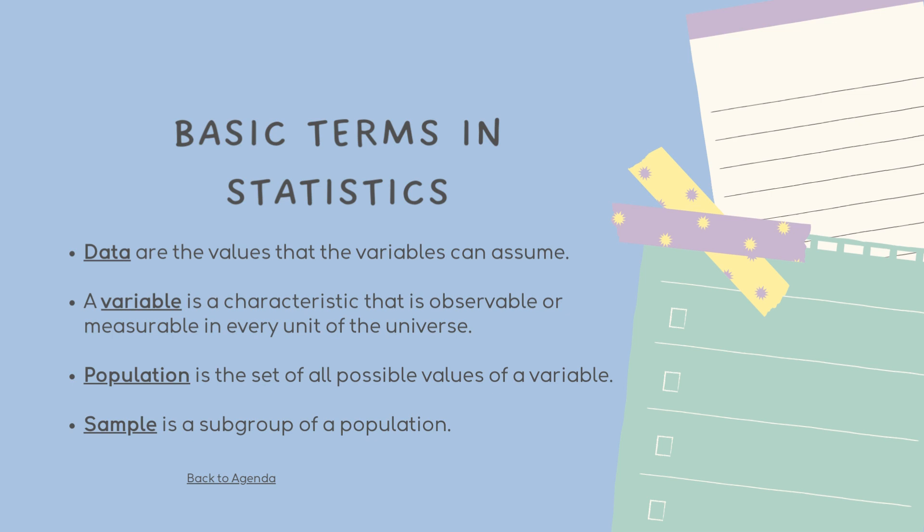Next, a variable. A variable is a characteristic that is observable or measurable in every unit of the universe. A variable is any characteristic, number or quantity that can be measured or counted. A variable may also be called a data item. Age, sex, income, expenses, grades, eye color, and vehicle types are examples of variables.